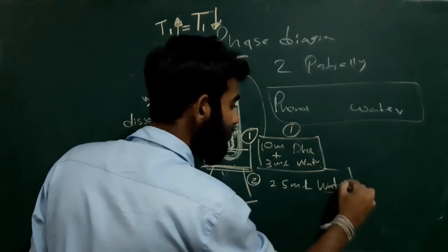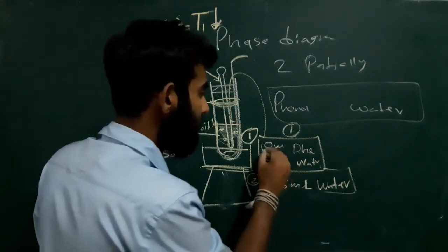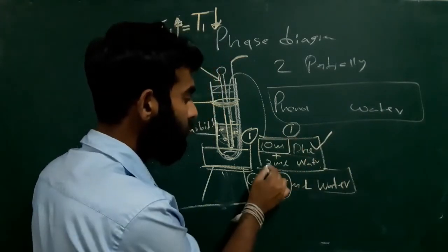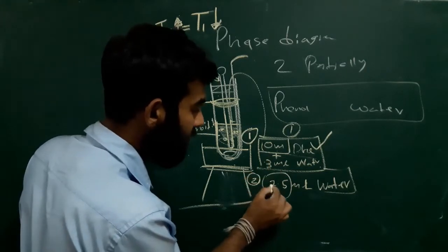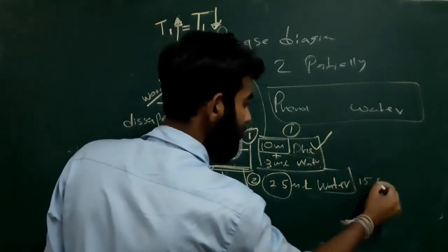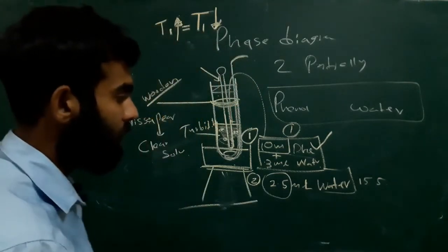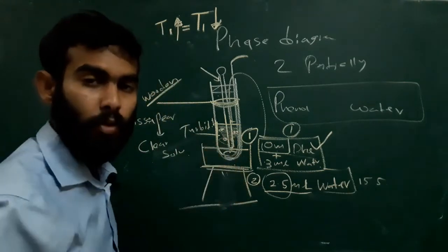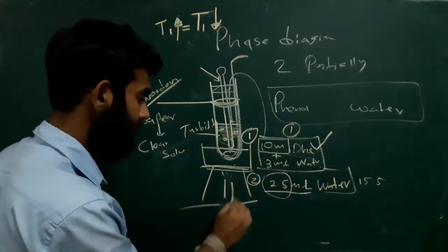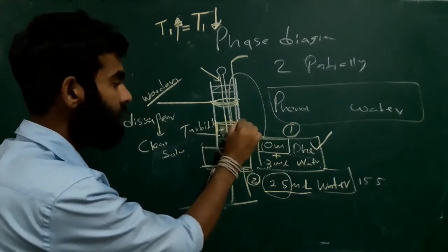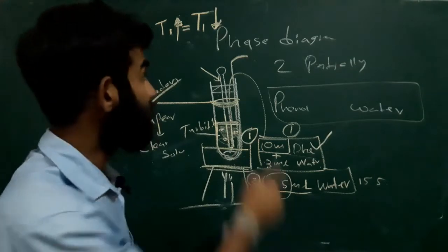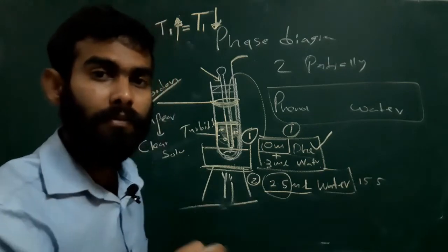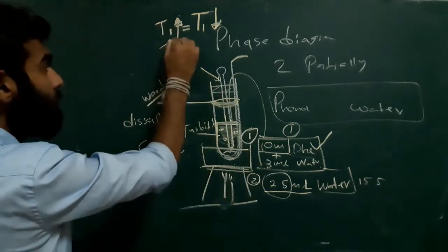Now we are increasing the water amount. The phenol volume remains constant at 10 ml, and we add another 2.5 ml of water, making the total volume 12.5 ml. We will heat this solution again using the water bath. At a certain temperature — not T1 but another temperature — the turbidity will disappear and we will see a clear solution. We will record that temperature as T2.